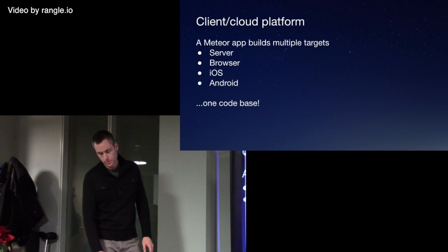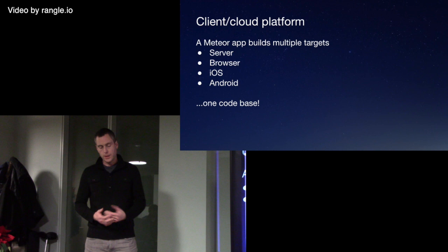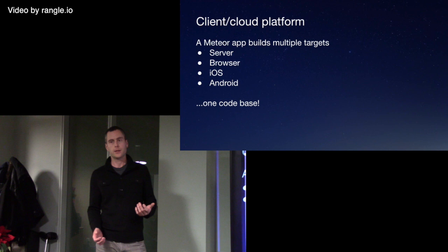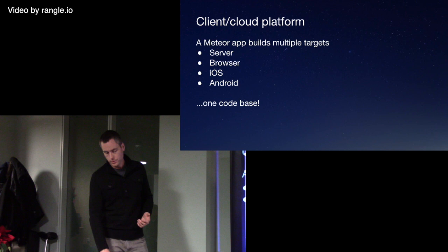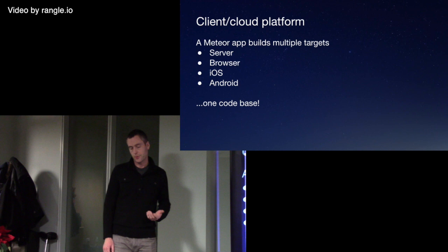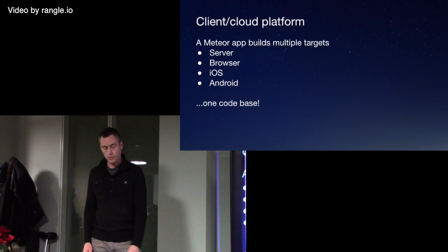A Meteor app builds multiple targets: there's the server and there's the browser. This was how it's been for the last two years since the project started. Because this architecture was already there, they very easily — literally in a few weeks as far as I can tell — when version 0.9 came out, they said they could really easily add Cordova support right into the framework. So now we've got iOS and Android as core platforms you can build for — all with one code base.